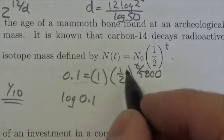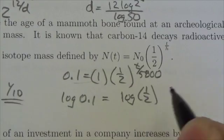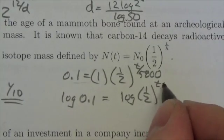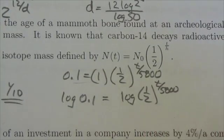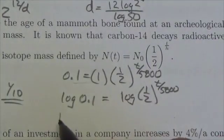So I'll get the log of 0.1 will equal the log of one half to the t over 5,800. And the whole point of taking the log was so I could bring down that exponent.